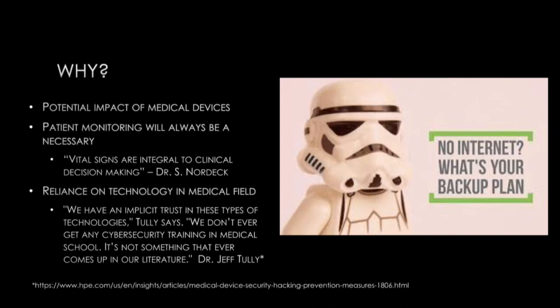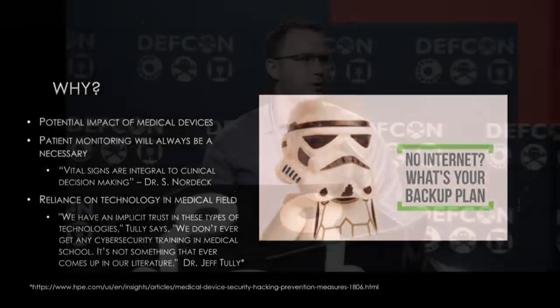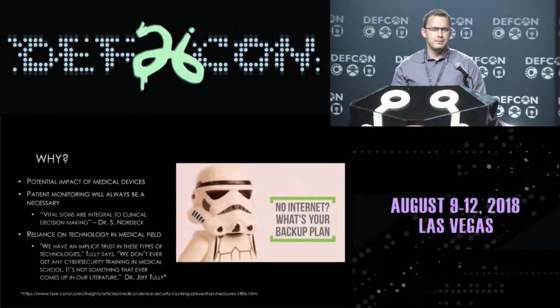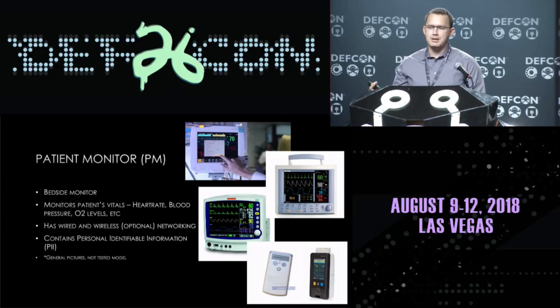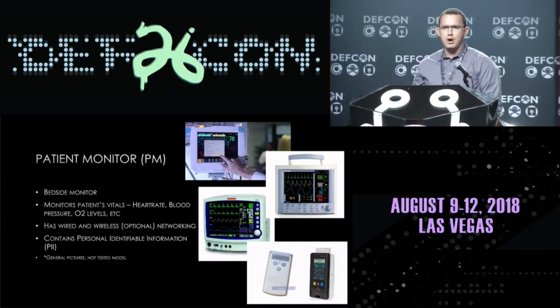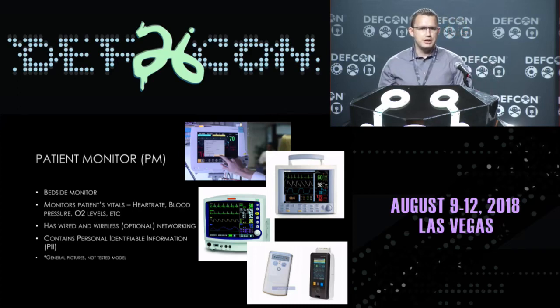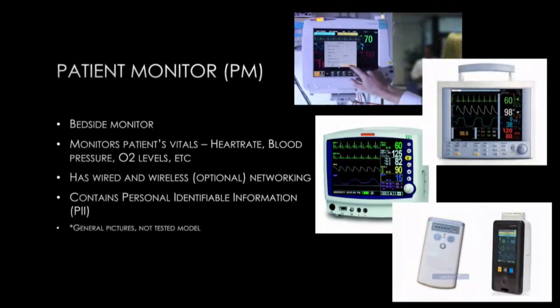I agree with another speaker here, Dr. Jeff Tooley, when he states that we trust these devices implicitly to provide us accurate information. Furthermore, we don't receive any training in medical school explaining the potential threats that exist with these devices. A patient monitor is a device you'll find in the emergency room as well as the intensive care unit — those big boxes at the top of the screen. They obtain heart rate, heart rhythm, blood pressure, oxygen saturation, and many other metrics that physicians use to make decisions on whether a patient is sick, whether they need to go to the OR immediately, and basically how well the patient is doing.